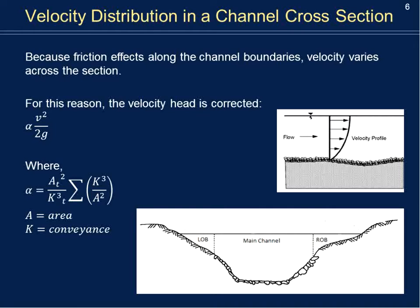Velocity distribution in an open channel differs from a pipe. The highest velocities are at the free surface because they experience the least friction — only the air above. Near the stream bed, flow experiences the greatest friction, so velocity is minimal, near zero. We want to adjust the velocity head, or kinetic energy head, to appropriately reflect how much energy is moving through the system due to velocity.